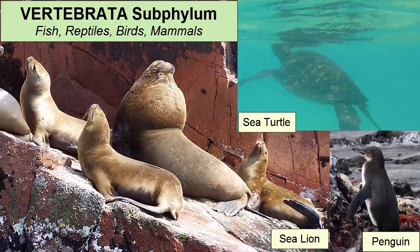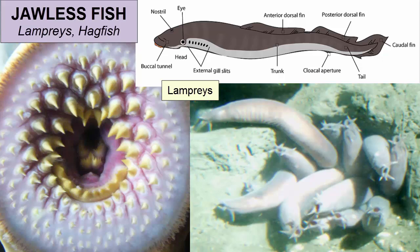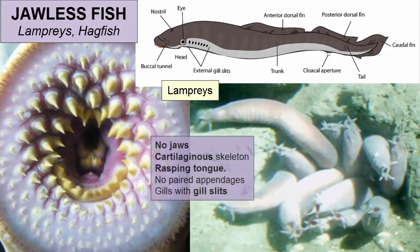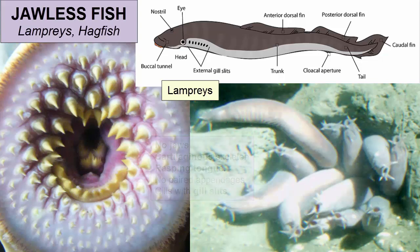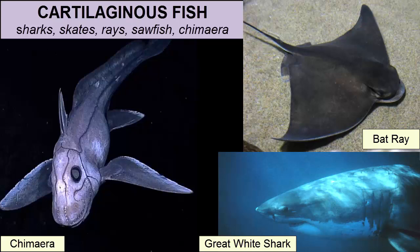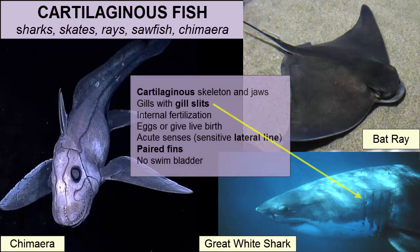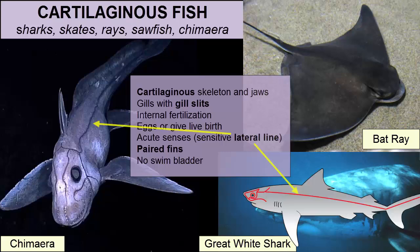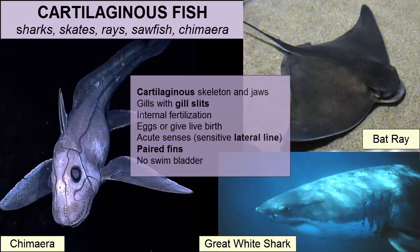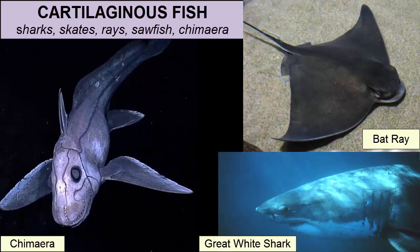Subphylum Vertebrata includes the following classes. Class Agnatha, or jawless fish, consists of 50 species with no jaws, a cartilaginous skeleton, and a rasping tongue. They have no paired appendages and include lampreys and hagfish. Class Chondrichthyes, or cartilaginous fish, consists of fish with a cartilaginous skeleton and jaws. Gas exchange happens through gills; they use internal fertilization and produce either eggs or give live birth. They have acute senses including lateral lines that pick up electrical signals and movements in the water.